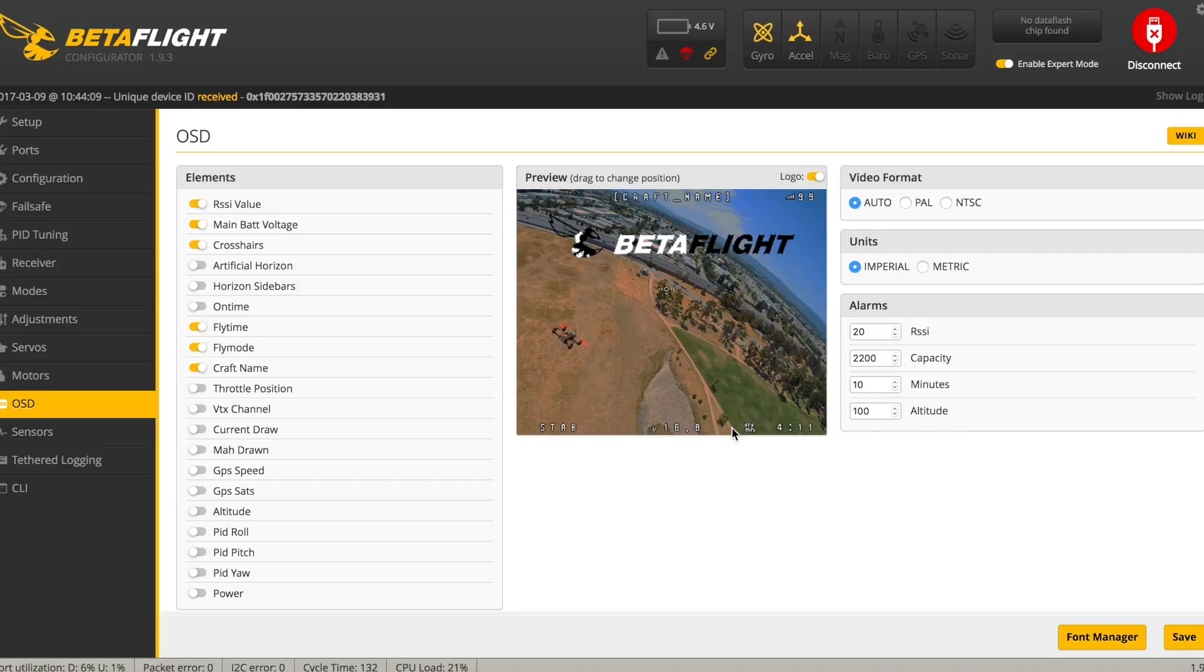out of all this and then your total flight time. So that's it that's the setup to use a TX03 camera with the Omnibus BetaFlight Micro F3 flight controller to get the OSD stuff to work. So that's it I hope this helps some of you guys thanks